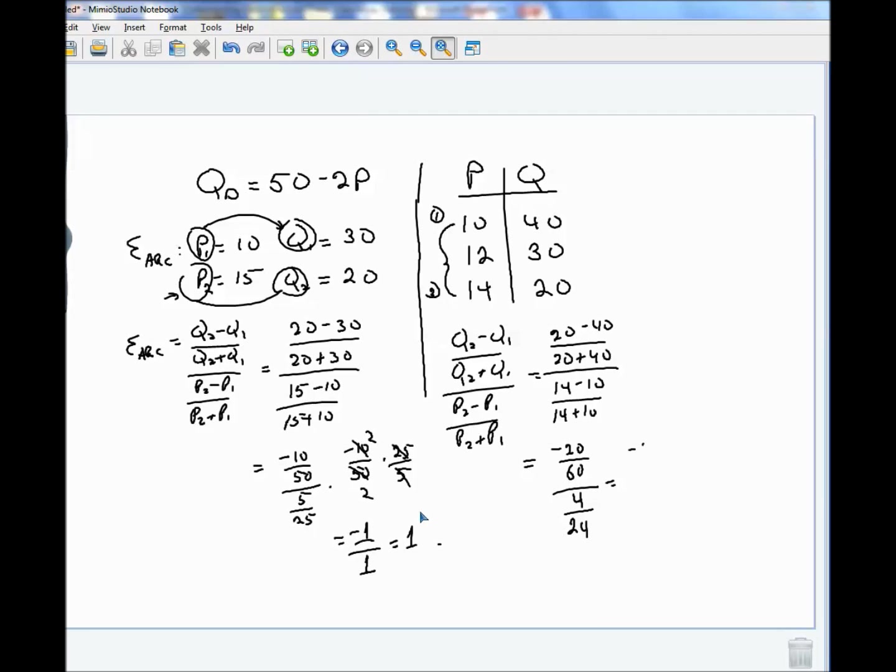Inverting and multiplying, I get minus 2 over 6 times 24 over 4. So let's see. 4 will go into 24 six times, right? And 6 will go into 6 one time. So I'm left with minus 2 over 1. So now we have two elasticities, minus 1 and minus 2.